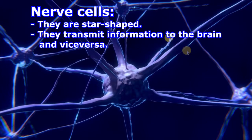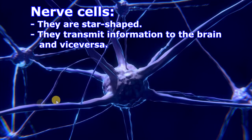Nerve cells, as you can see, are star-shaped. They use all these connectors to transmit information from the brain to other parts of the body and vice versa.